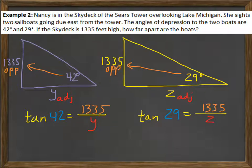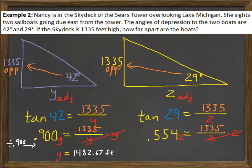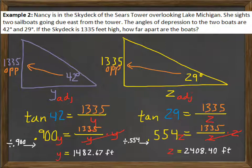And likewise for the second function, it looks the same, except I have a 29 degree angle. I'll type those two in the calculator, and I get .900 for tangent of 42 and .554 for tangent of 29. And the other parts remain the same. Hopefully this is old hat to you guys, since we've been practicing a lot. I'll multiply both sides by Y and both sides by Z on the two equations, so that way I can have the Y and the Z out of the denominator. At this point, I need to divide by the .900, so that means Y is going to be 1482.67. And dividing by .554 on that one, Z is 2,408.40.